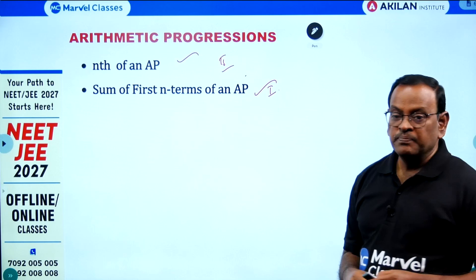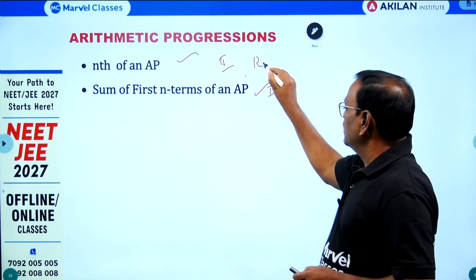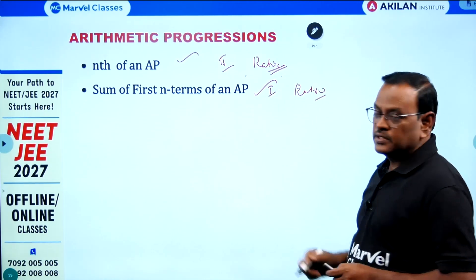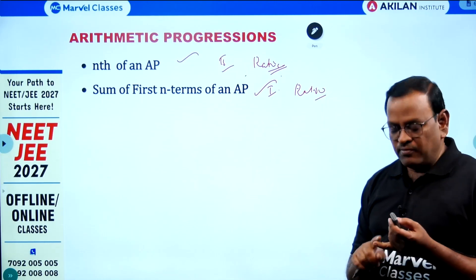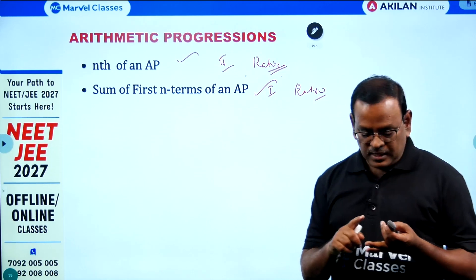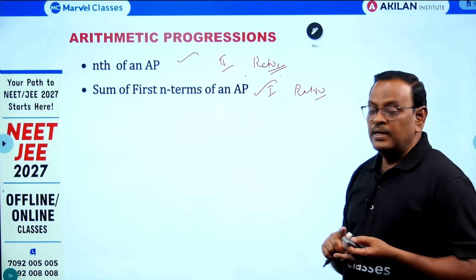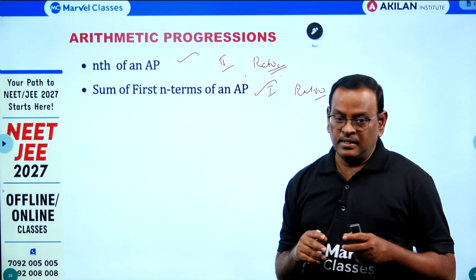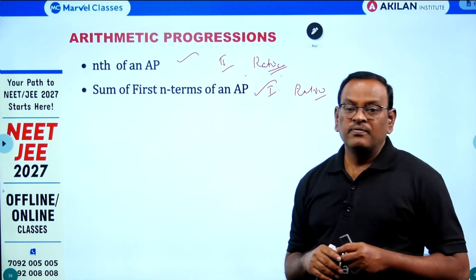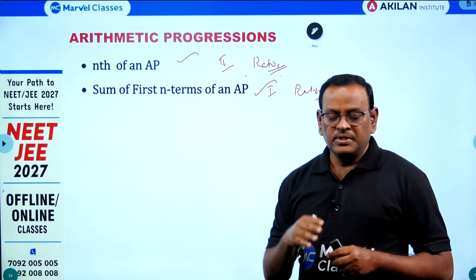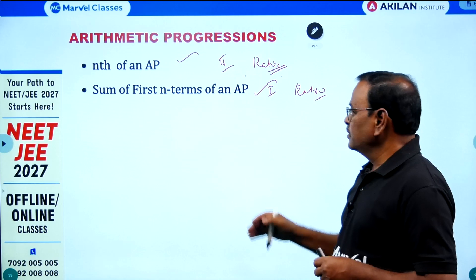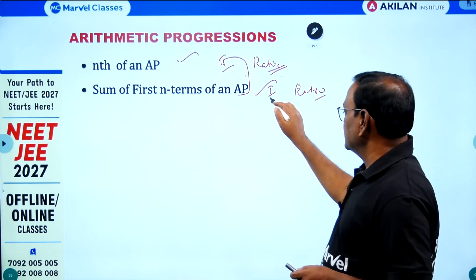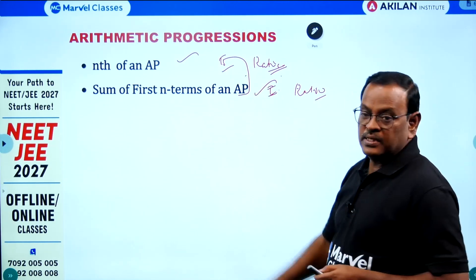In the sum of first n terms of an AP, an important concept is the ratio of sums. Word problems are very, very important, followed by ratio of sums, then the middle term of an AP, then finding the sum of the first 20 multiples of 7. If the first number and last number are given, find the sum of numbers divisible by or multiples of 7. These two exercises are the most important — focus on both S_n problems and T_n problems.